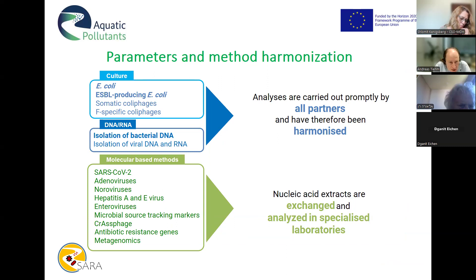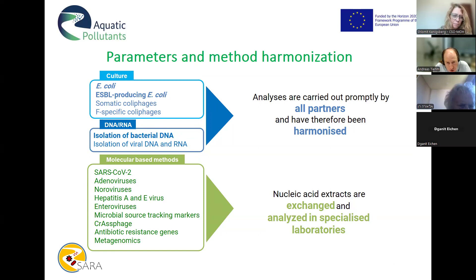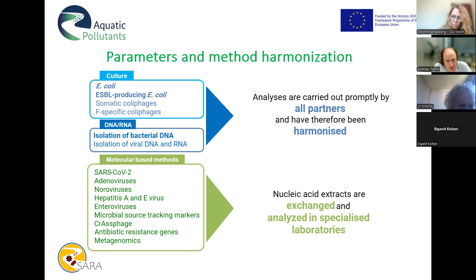Now I come to the method harmonization part. At the beginning of the project we discussed different methods and agreed to use cultivation methods for E. coli, ESBL-producing E. coli, somatic coliphages, and F-specific coliphages — all already standardized. We agreed on specific methods for isolation and extraction of bacterial DNA and viral DNA and RNA, so all partners perform this extraction.